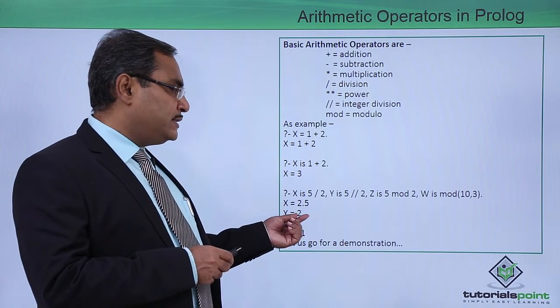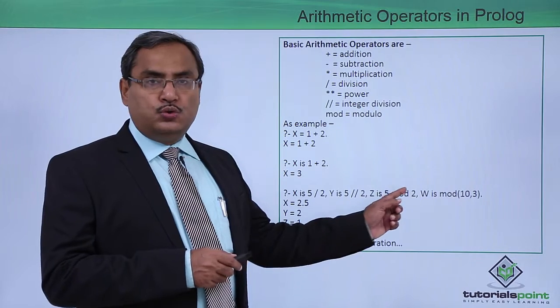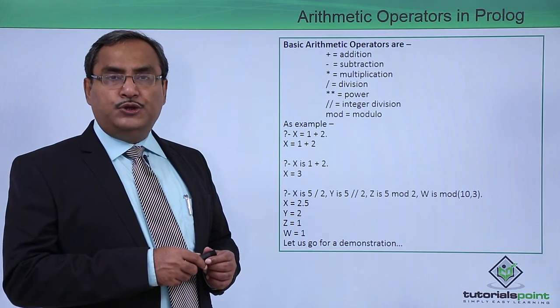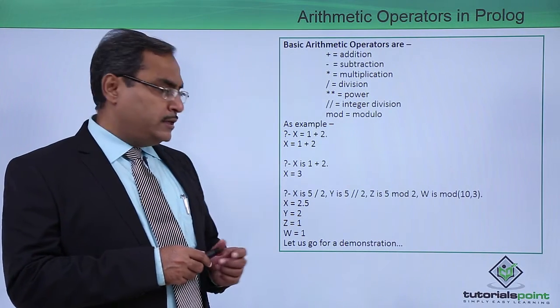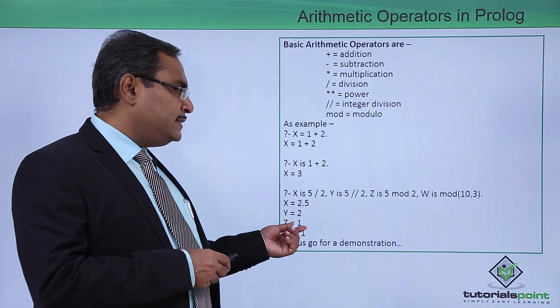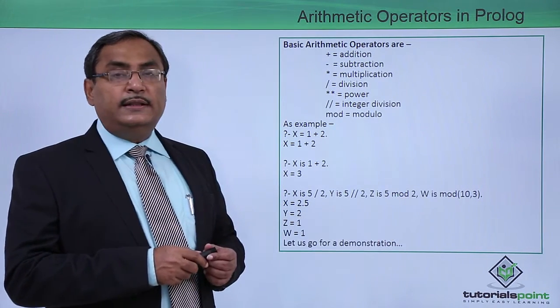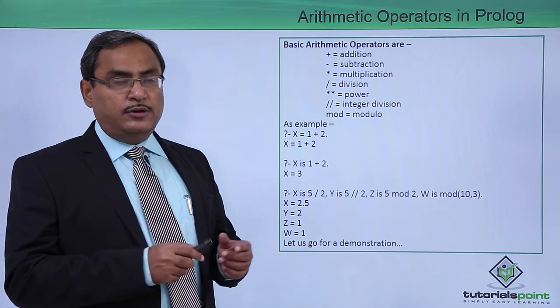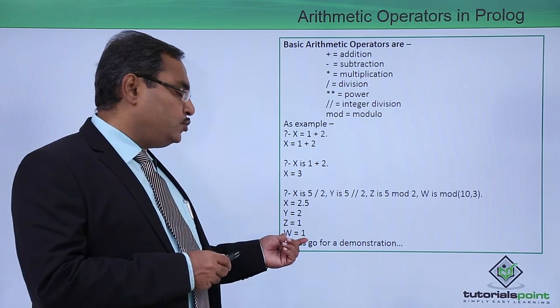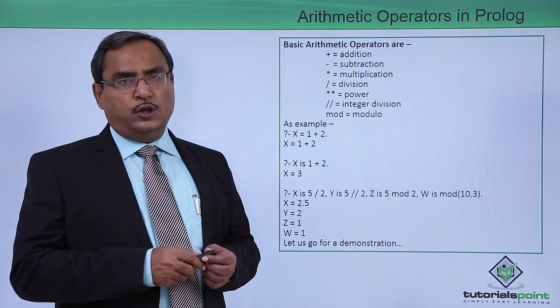It will give you 2 in this case. Z is 5 mod 2. If you divide 5 by 2 and if you consider only the remainder, you will be getting z as equal to 1. And w is mod 10 3. If you divide 10 by 3, the remainder will be 1. W is equal to 1. In this way the answers will be obtained.